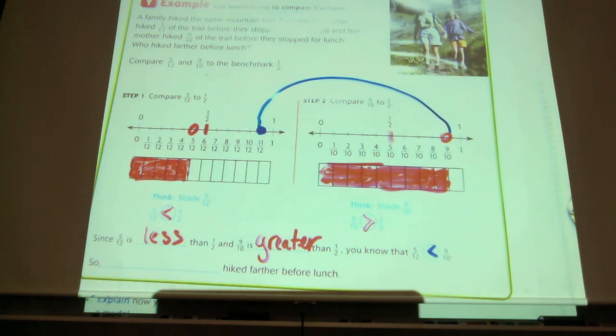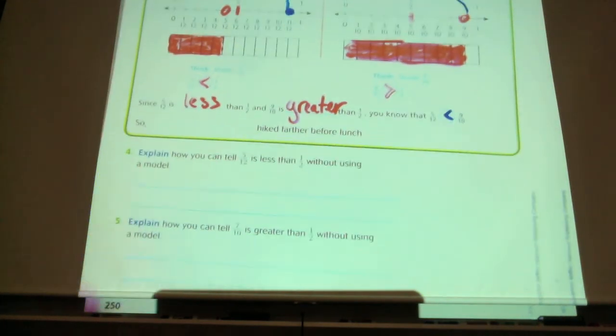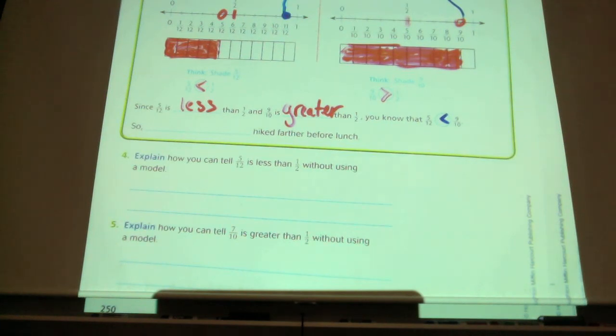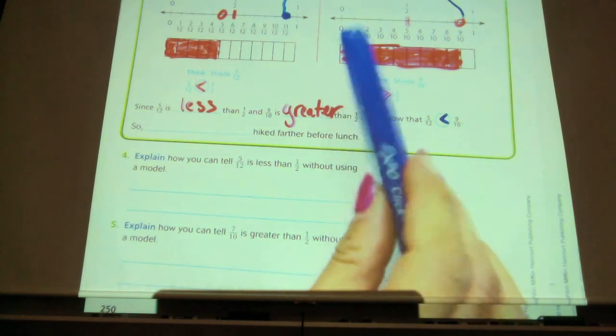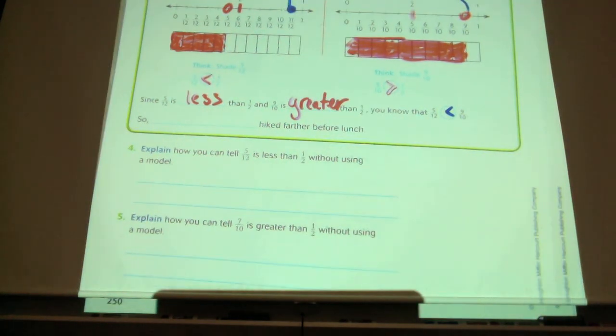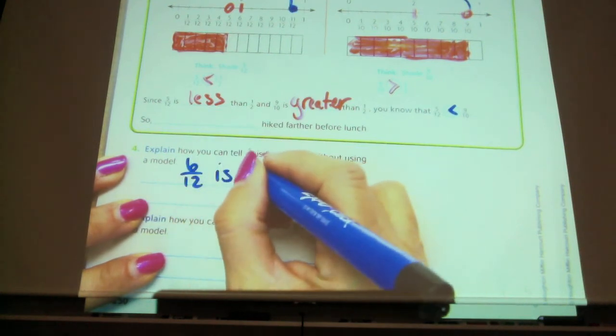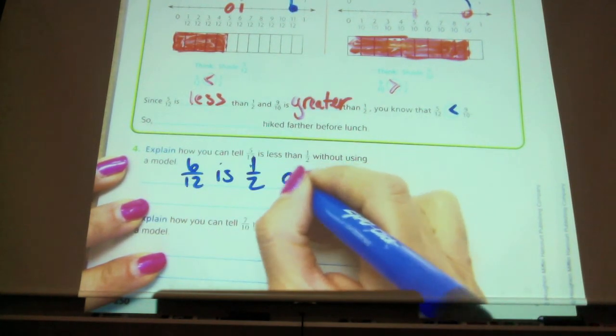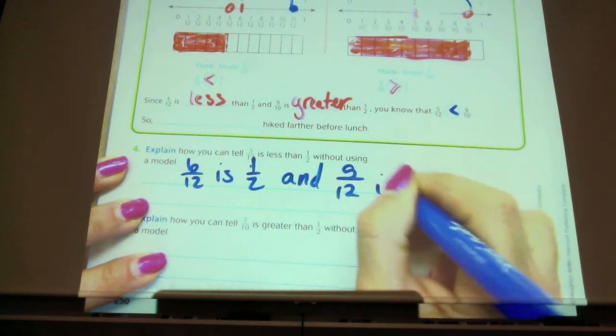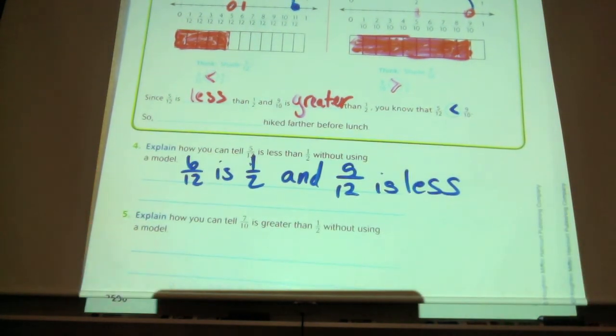Number four asks you to explain how you can tell that five-twelfths is less than one-half without using a model. How can you do that with fractions without having to do a number line or a model? Go ahead and write in your own words. How can you figure that out? Because six-twelfths is a half and five-twelfths is less. So you said that six-twelfths is the half, right? And five is less.